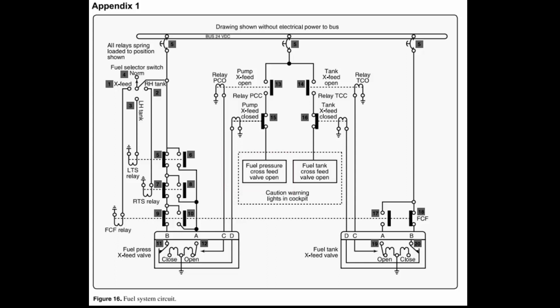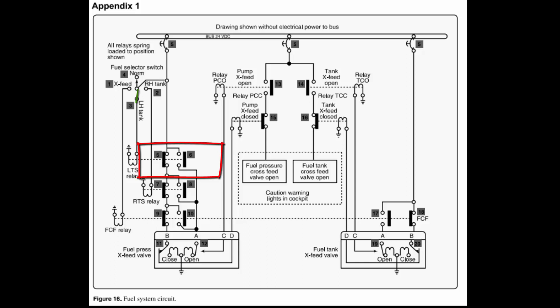That's how you figure it out without doing anything — you look at what the relay powers. Now let's show how this works in a left-hand selection. Over here on the left, this fuel selector is going to be selected to left. That puts power down to the LTS relay, which opens contact 5 and closes contact 6. Then power coming off this parallel line zigzags through 6 down to pin A and opens the cross-feed valve through this set of windings on the right. Once the valve is open all the way, the limit switch goes over to contact this arrow at pin C and powers the PCO relay.